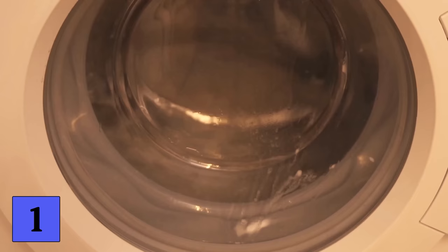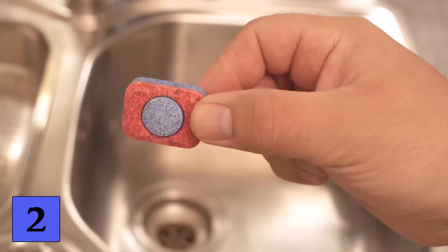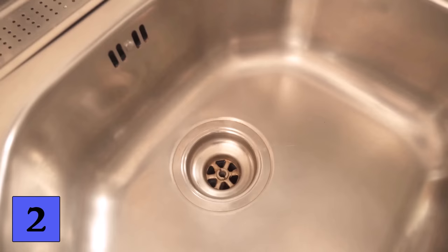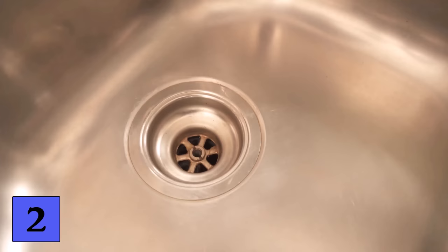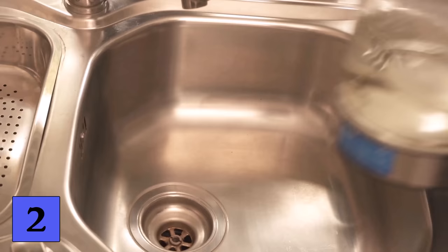For trick number 2 you need a conventional dishwashing tab. One problem that many people have is that the drain in the kitchen stinks or no longer drains properly. This is also due to the fact that a lot of dirt gets into the drain when you wash the dishes. Most of the time you can't prevent the whole thing from happening.